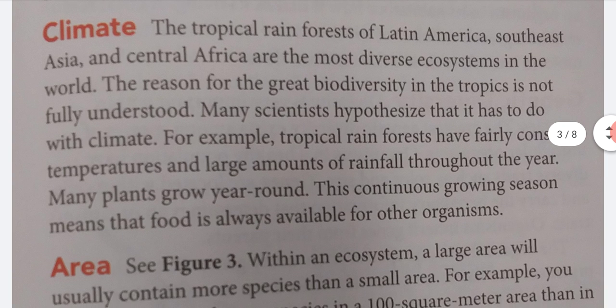Climate. The tropical rainforests of Latin America, Southeast Asia, and Central Africa are the most diverse ecosystems in the world. The reason for the great biodiversity in the tropics is not fully understood. Many scientists hypothesize that it has to do with climate. For example, tropical rainforests have fairly constant temperatures and large amounts of rainfall throughout the year. Many plants grow year-round. This continuous growing season means that food is always available for other organisms.